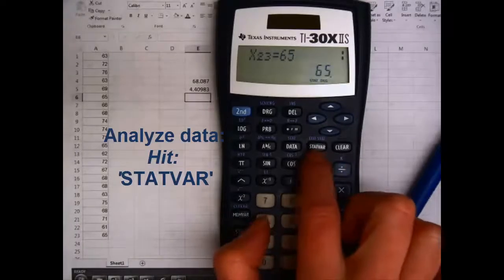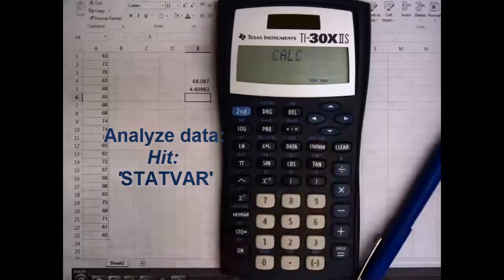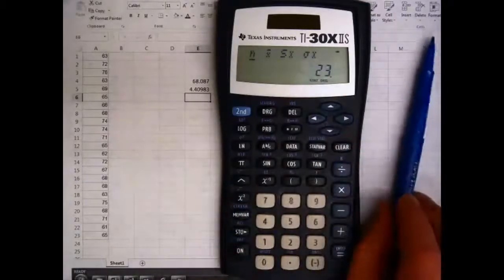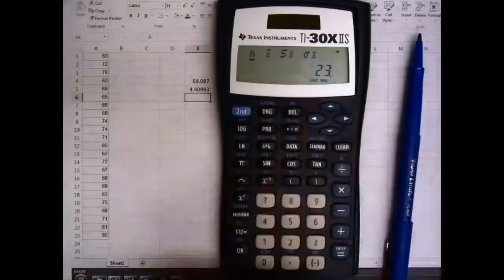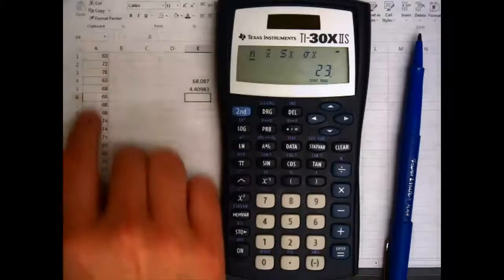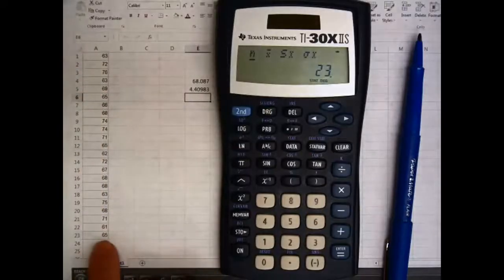Now I'm going to hit this statvar button, and it's going to run some calculations. You can see it actually thought for a second. It gives me several values of importance. This one's kind of obvious – N stands for the number of pieces of data, 23.